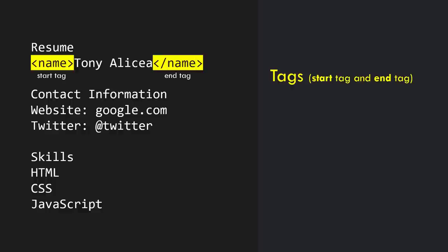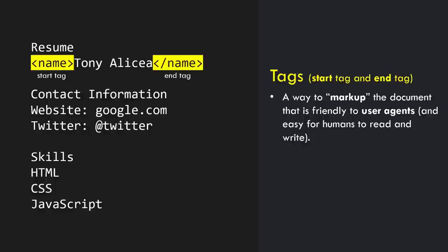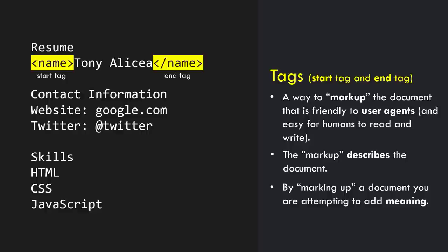These pieces of markup have a name: tags - a start tag and an end tag. A tag is a way to mark up the document that's friendly to user agents and easy for humans to read and write. The markup describes the document. And by marking up a document, you are attempting to add meaning. This is the idea of markup in general. It's really a simple concept, yet it's driven tremendous progress in the area of information architecture.